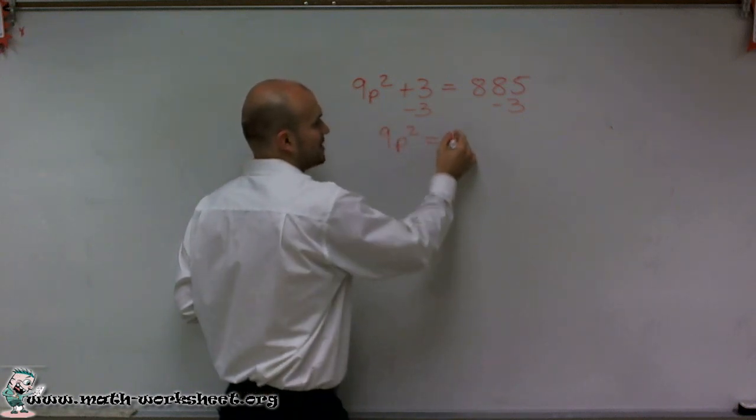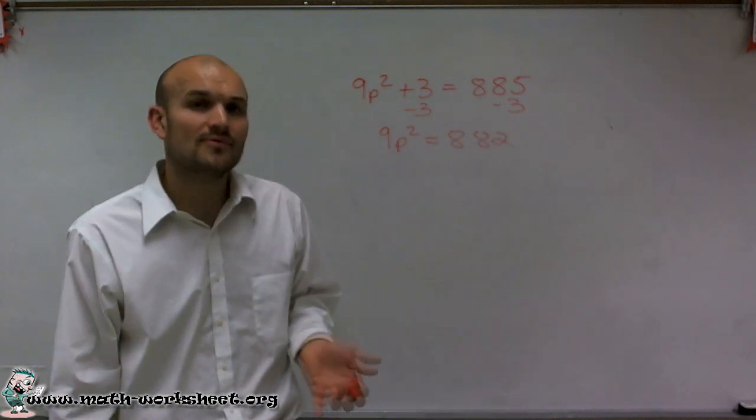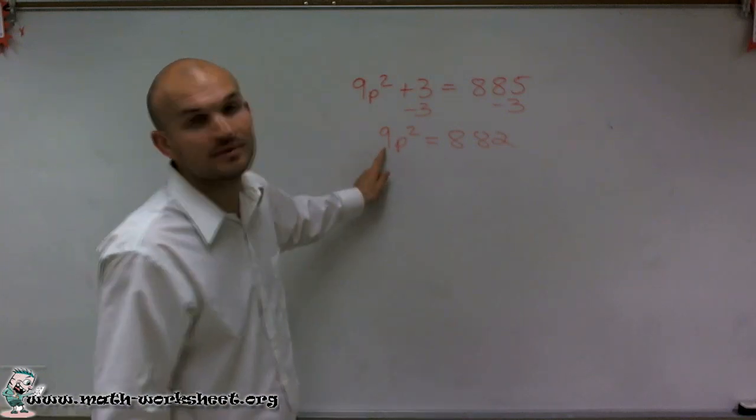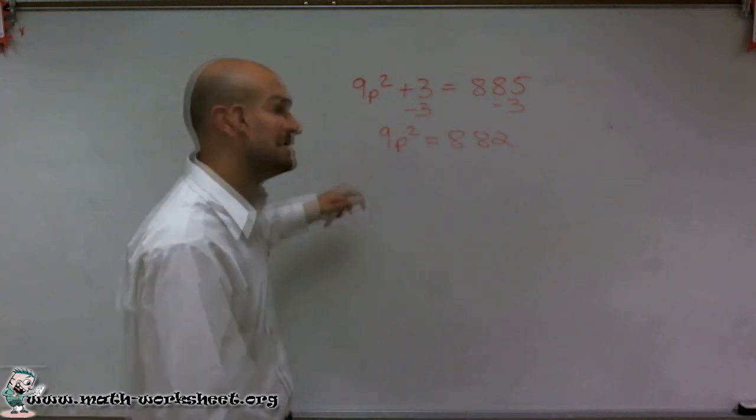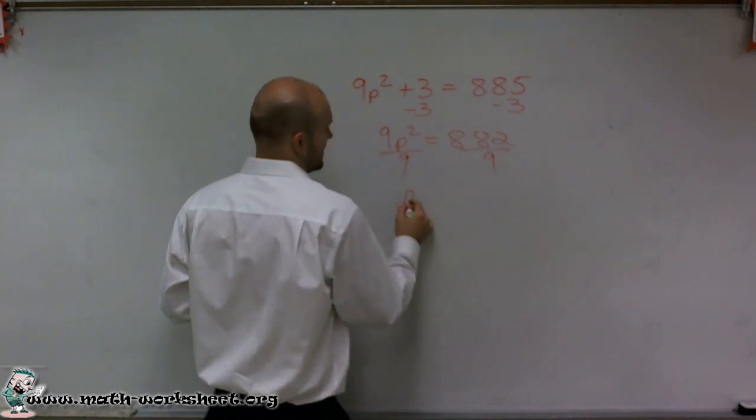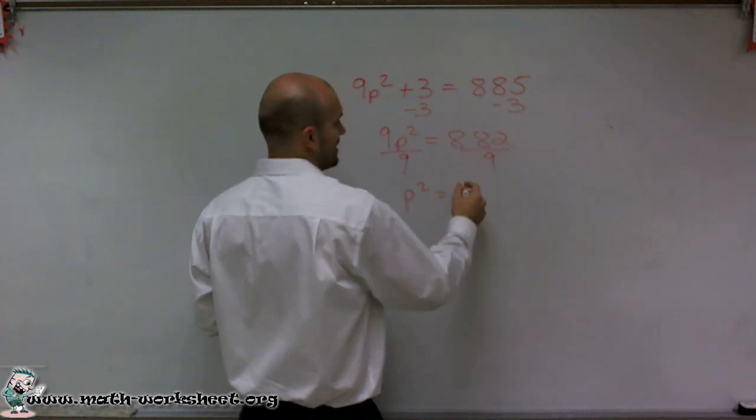So I get 9p squared, which is 882. Now the next thing we need to do is undo multiplication and division. Since my variable p is being multiplied by 9, I'm going to divide by 9 on both sides.